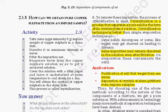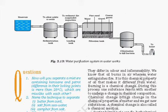Water purification in water works: water comes from a large reservoir. First, it goes to a sedimentation tank where large sediment settles at the bottom. Then it passes to a loading tank to sediment suspended impurities. Next it goes to a filtration tank where water is filtered through fine sand, gravel, and coarse gravel for natural filtration. Finally, chlorination is done — chlorine is added to kill bacteria like E. coli — and then the water passes through pipes to reach our homes through the tap.